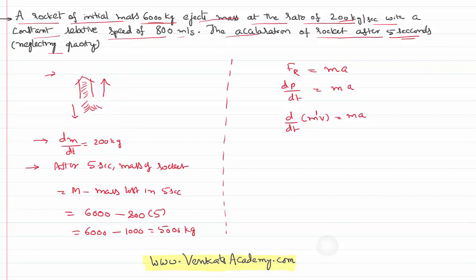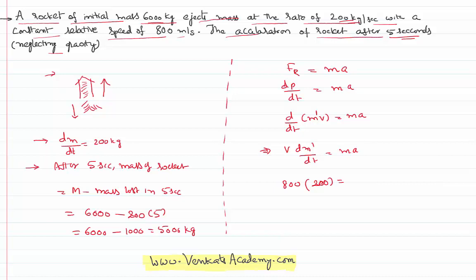But this m is different — because mass is not constant, rather velocity is constant. Therefore, v · (dm'/dt) equals Ma. So I can write v is 800, dm'/dt, the rate of mass, is 200 kilograms, and the mass of the rocket at that instant is 5000, into acceleration.